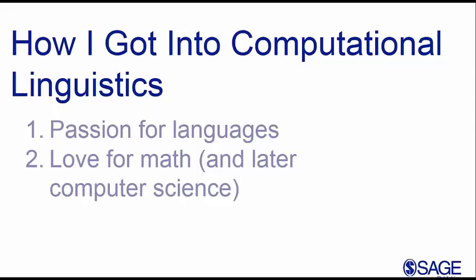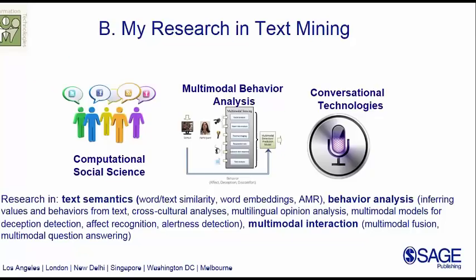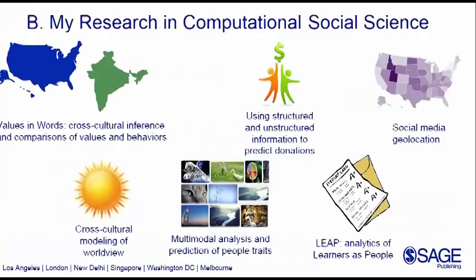My research is primarily in natural language processing and text mining. Within that, my lab works on three main areas: computational social science, multimodal behavior analysis — where language is joined by other modalities like facial expressions and physiological sensing for understanding people — and conversational technologies. Within computational social science, we work on projects at the intersection of NLP and social sciences.